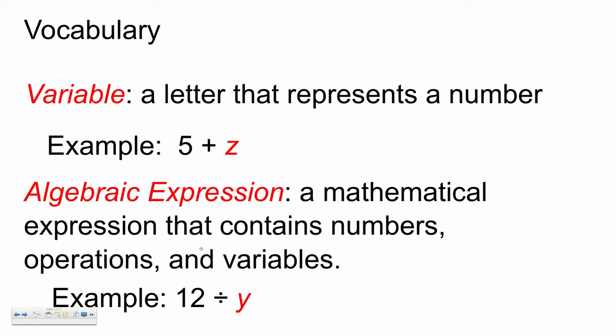So let's start with our first objective, variable. A variable is a letter that represents a number. An example would be having an expression like 5 plus z. I know this seems a little weird. Usually we're not used to having letters in a math problem. But you'll get the point by the end of the lesson.